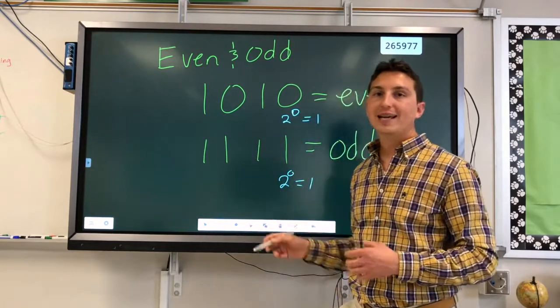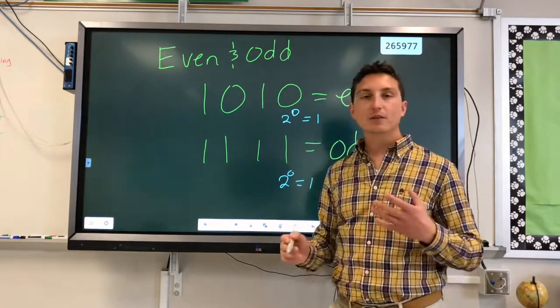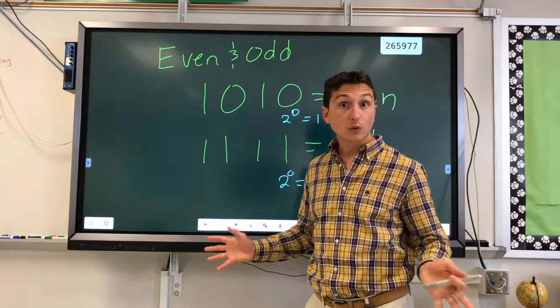I know if it is absent, that number has to be even. And if it's present, the number has to be odd. Why? How do I know that?